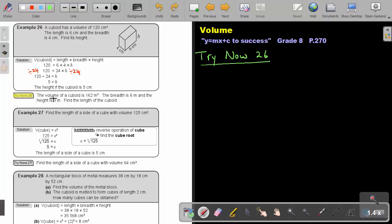Try now 26. The volume of a cuboid is 162 cubic meters. The breadth is 6 and the height is 3. Find the length. Always start with the formula.